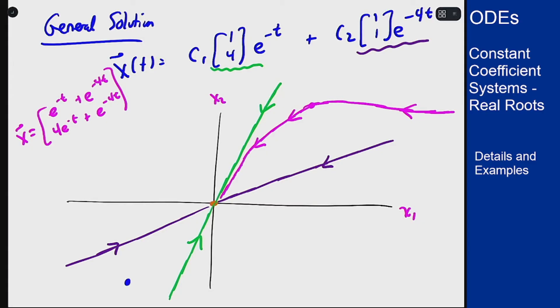If I start somewhere in here I'm going to do the exact same thing, approach zero along the green line and flatten out along the purple going the other way. If I start over here I'm going to come in this way to approach with the green line like this and again leave out along the purple.